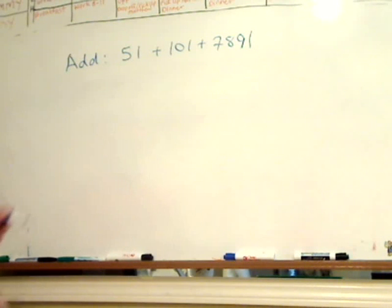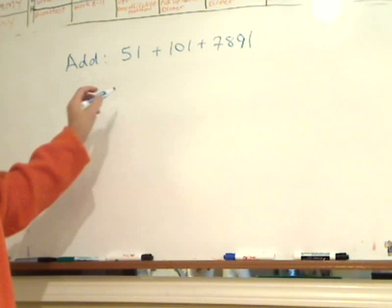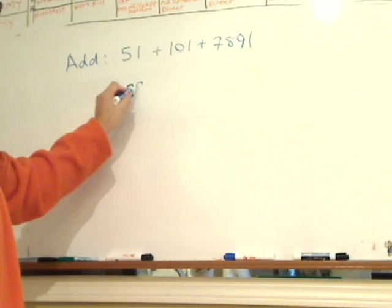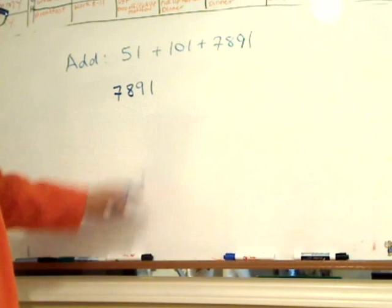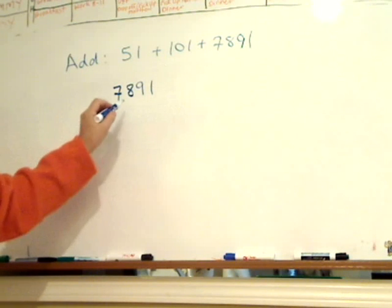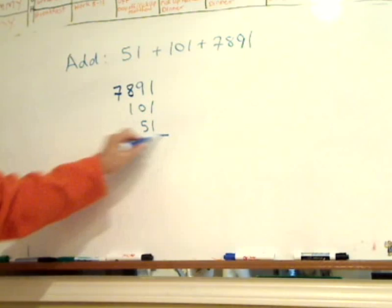What I would advise you to do is actually line them up. Starting with the biggest number first—now you don't have to, but I usually start with the biggest number first. 7891, and line it up by its digit placement. So the next biggest number is 101, and then the smallest one is 51. I'm going to add them up.